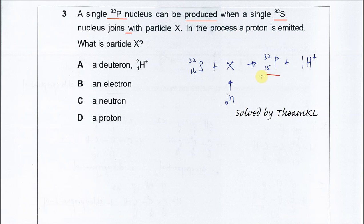Okay, this question you need to know which one is the reactants and products. Phosphorus can be produced, so phosphorus must be the product when single sulfur nucleus joins with particle X. So the sulfur and particle X must be the reactants. You must construct an equation to put phosphorus as a product.